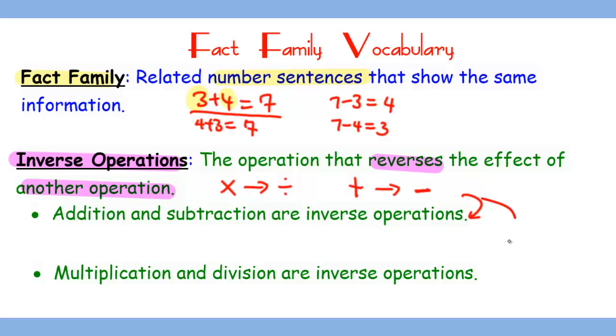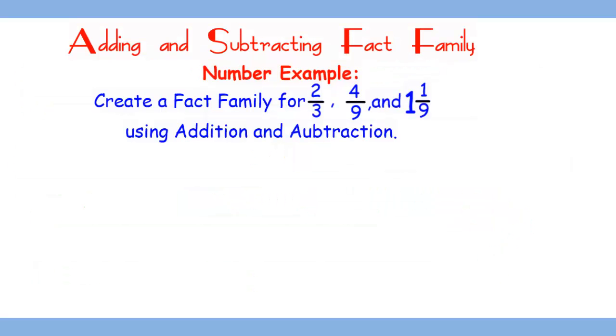Now, how do we create a fact family using addition and subtraction, which are inverse operations of each other? In the example given below, we have 2/3, 4/9, and 1 1/9. You should know that one of the facts given can be 2/3 + 4/9 = 1 1/9.